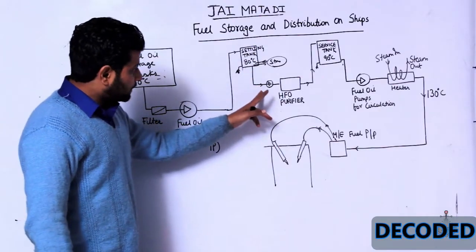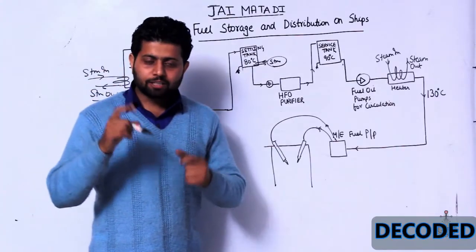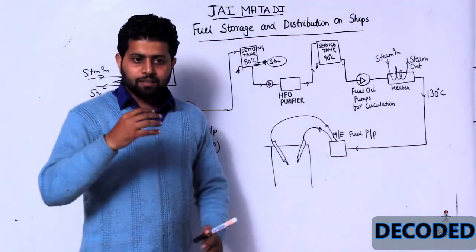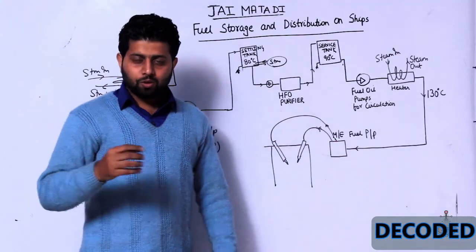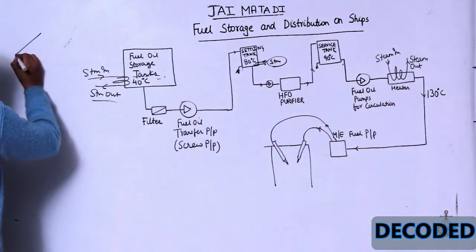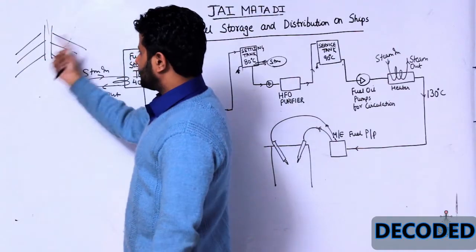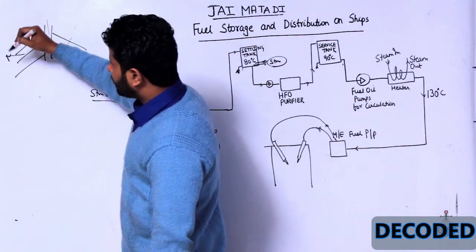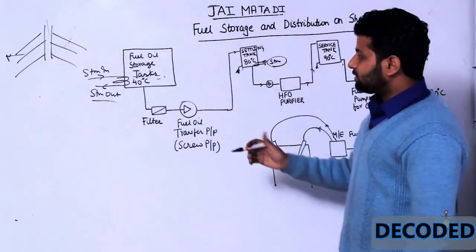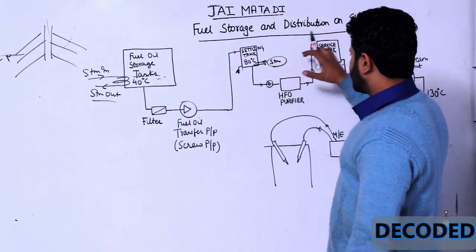After settling, the oil goes through a heavy fuel oil purifier pump into the purifier. The purifier works on the principle of centrifugal force, rotating at a very high RPM — up to 9000 RPM. Different density objects experience different centrifugal force. Water molecules are heavier so they move out, while oil stays in. Any sediments or hard molecules also move out due to higher density, and the clean oil goes into the service tank.